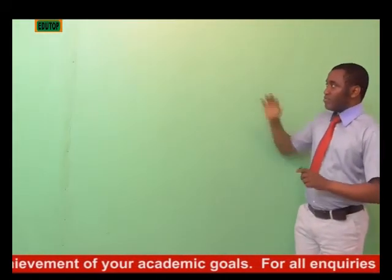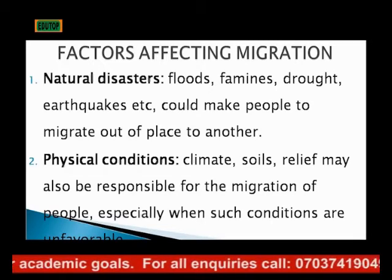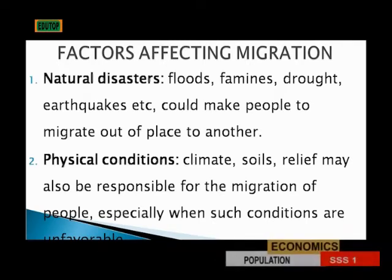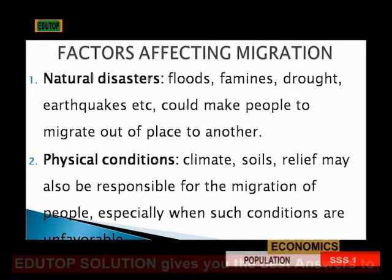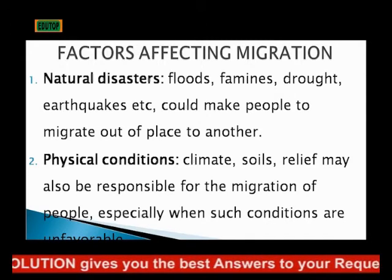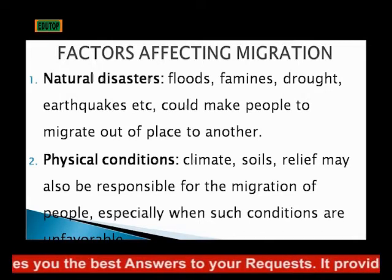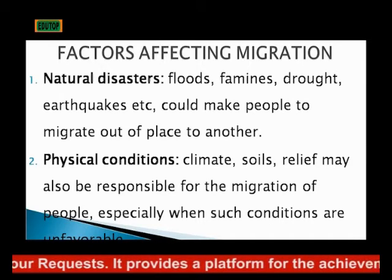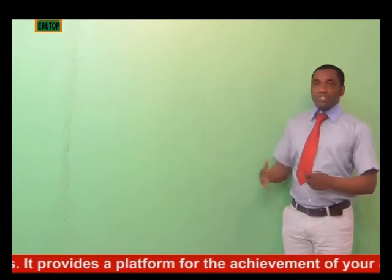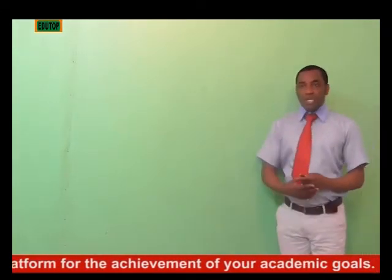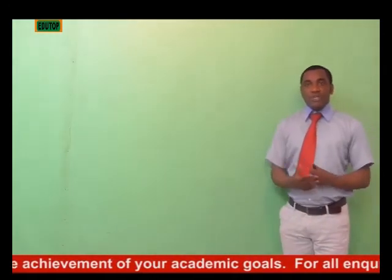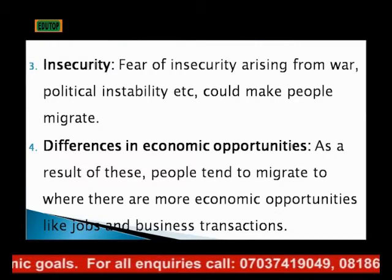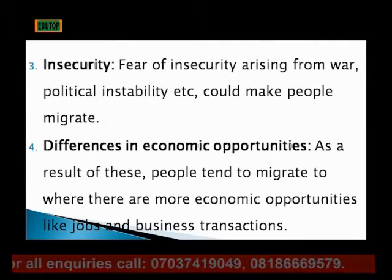Factors affecting migration. Number one, we have natural disasters such as floods, famines, drought, and earthquakes, which could make people migrate from one place to another. Second, we have physical conditions such as climate, soils, and relief, which may also be responsible for the movement of people, especially when climatic conditions are not favorable to them. Another factor is insecurity. Fear of insecurity arising from war or political instability could also make people migrate from one place to another.